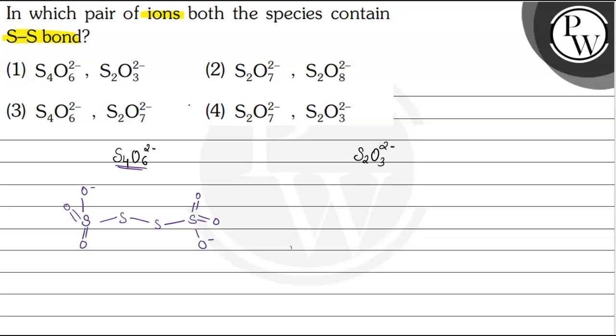So the first answer is this. And the second, in case of S2O3 2-, the structure is like S, S, here O and one dash, here O with dash and here O with dash.